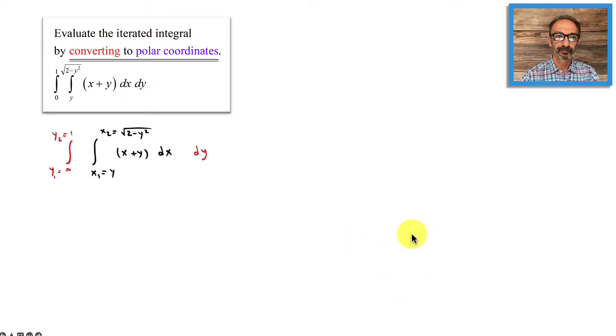Here's the problem to write it down. I'm using different colors as you can see to stay focused. dx inside with x1 equals y and x2 equals square root of 2 minus y squared, and the problem is y here.